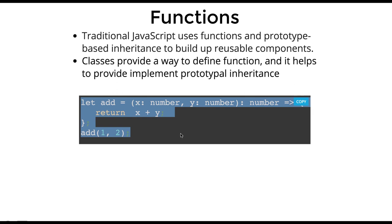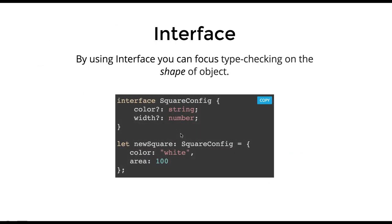Interfaces allow you to focus on type checking of objects. Sometimes we pass an object to a function that has multiple attributes — some of type number, some of type string — and we can put strict validation. We specify the type of each property, like color of type string or width of type number. This effectively creates a custom type. For example, 'newSquare' is of type SquareConfig because it has the same parameters. This provides strict validation — if you're calling an API and expecting a response with two attributes, you can validate that the response has both of the expected strings.